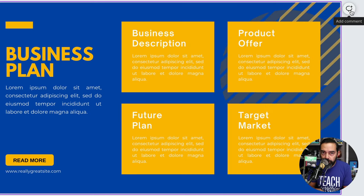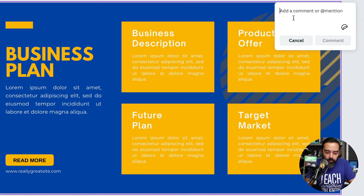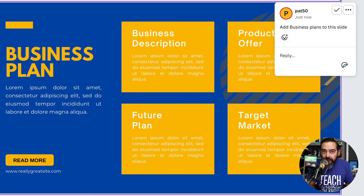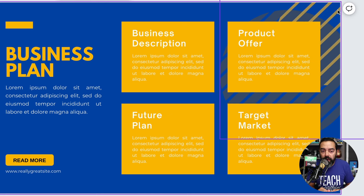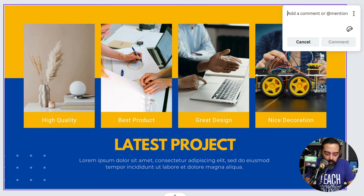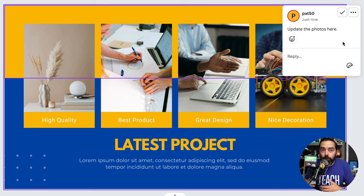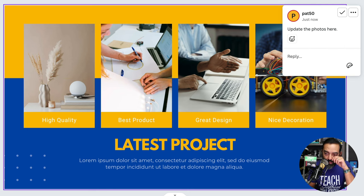This comment bubble is for your team. If you're coordinating with someone else on this presentation, you can leave comments like 'Add business plans to this slide.' Anyone else with access can see it, and when it's done they can hit the checkmark to resolve it. It's also a great to-do list for yourself — you might note 'Update the photos here' as a reminder before you actually give the presentation.